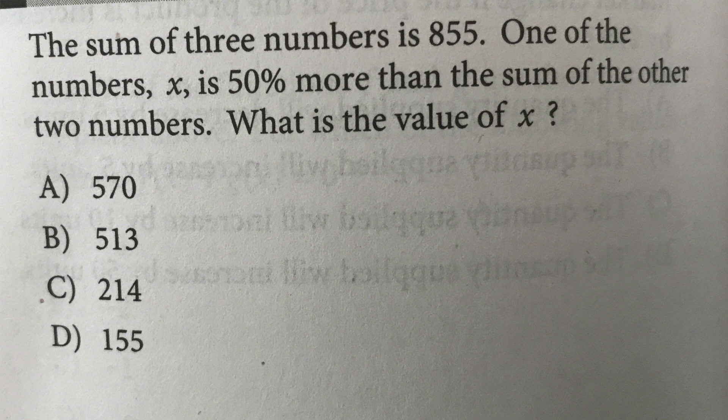All right, I hope you tried it on your own. Let's do it together. The sum of three numbers equals 855. One of the numbers X is 50% more than the sum of the other numbers. So what the heck is this?